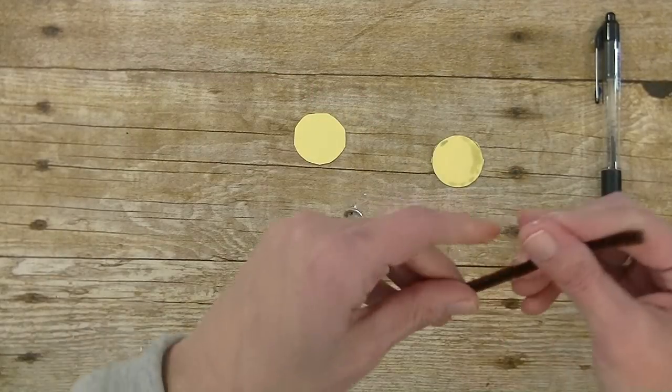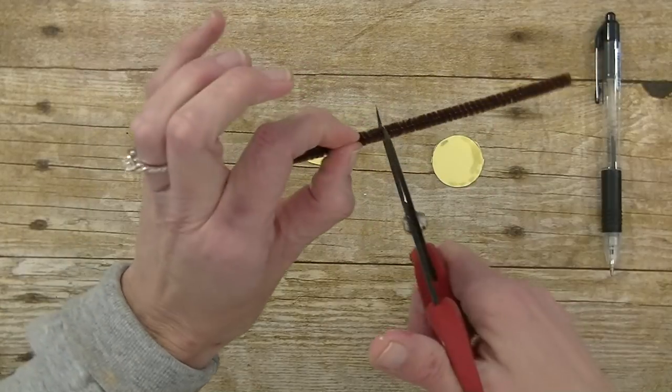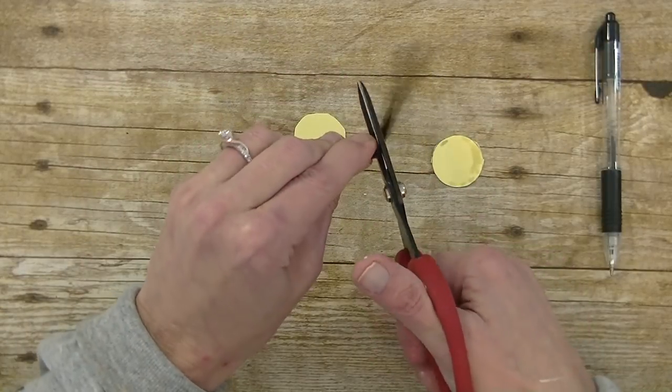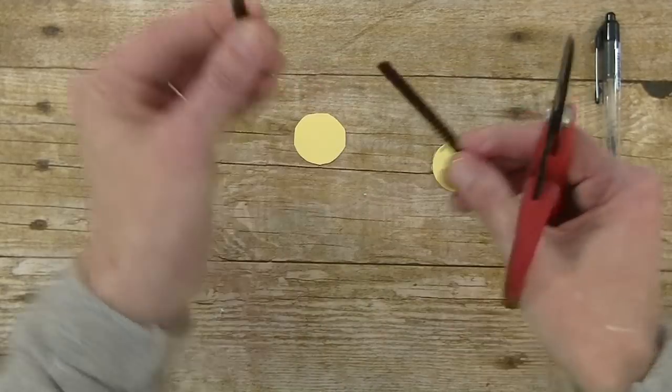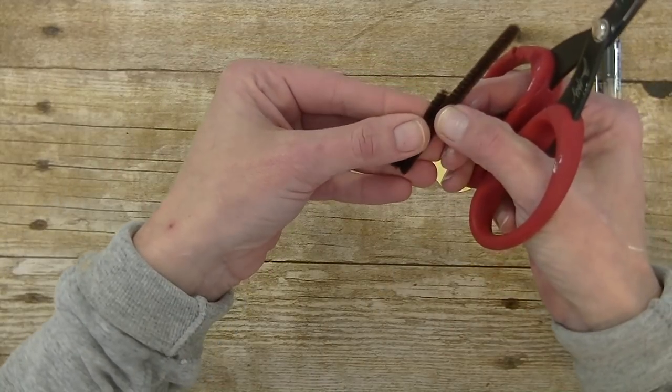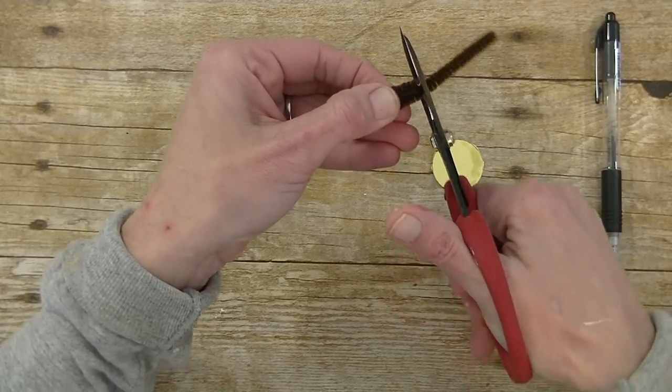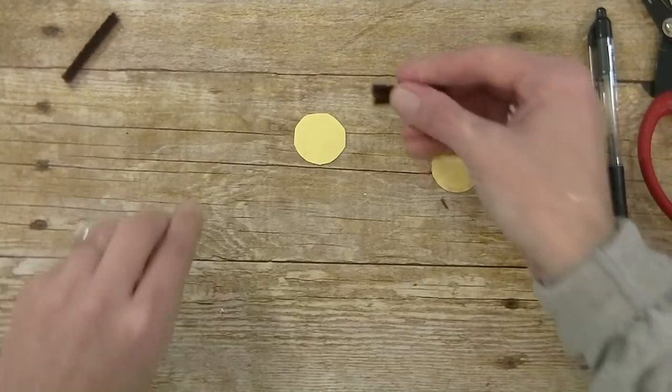I'm going to take my pipe cleaner. I'm going to cut about an inch and a half maybe. Just guessing. And you can pick up all these things at the dollar store. Probably even the candy. Okay so I have my two pieces of pipe cleaner.